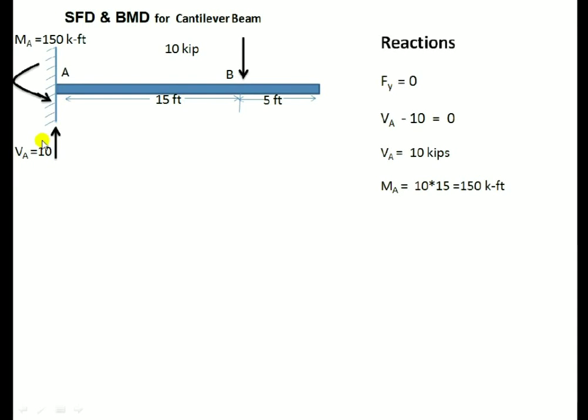In this video I will solve this cantilever for a point load. I will draw the SFD and BMD diagrams for this cantilever. These are the reactions. Taking FY equal to 0, this is VA upward and this is 10 kip downward.